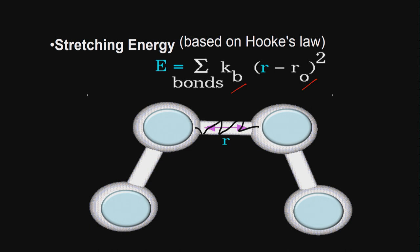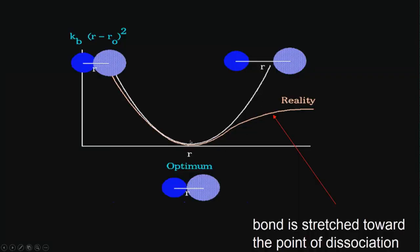Depending on the type of software, the number of parameters may vary — some have large numbers, some fewer. So between software you will always get a difference in energy calculation. Because it is (R − R0)², the graph appears like a parabola. If you stretch or compress the atoms, the energy increases. This is the optimum distance. Of course, you cannot pull beyond a certain distance, as the bond will break — it is stretched towards the point of dissociation.